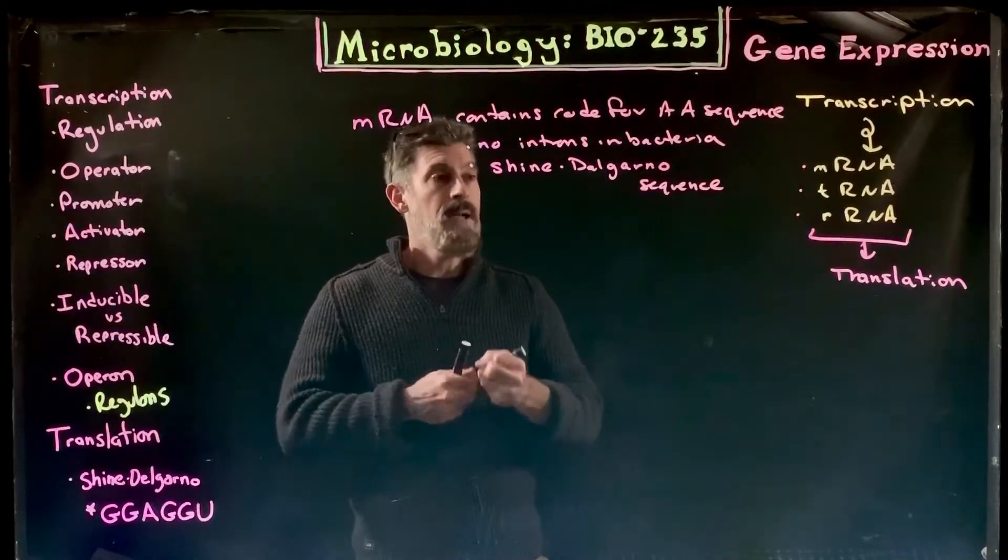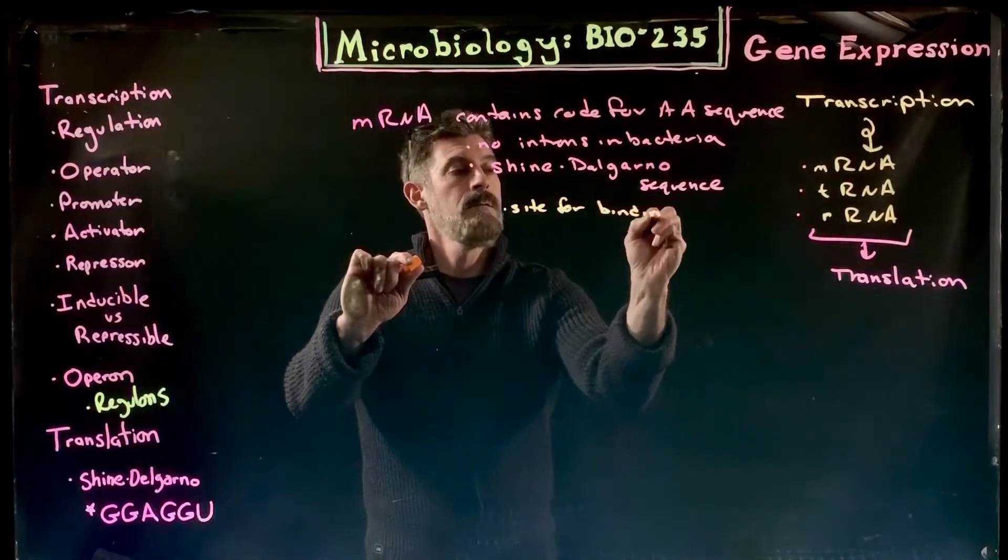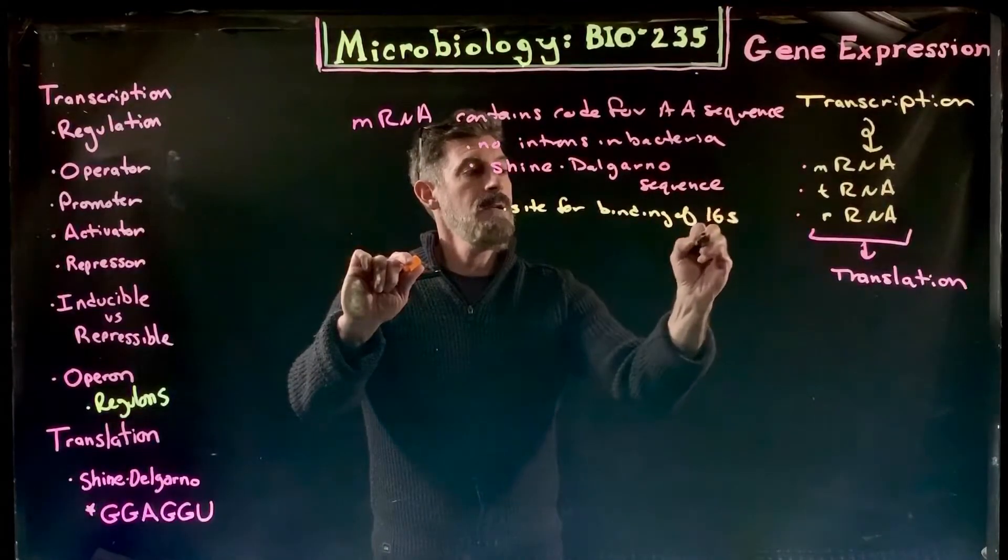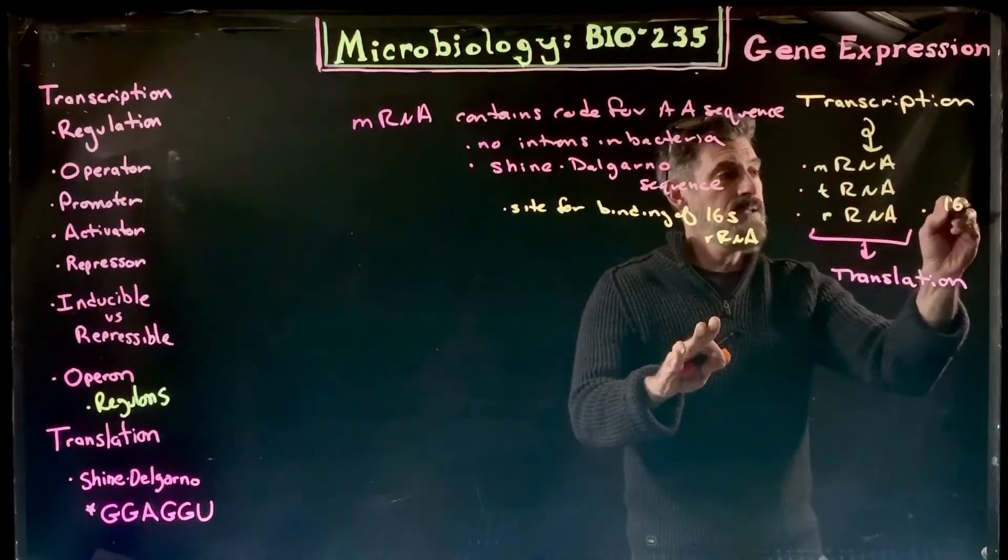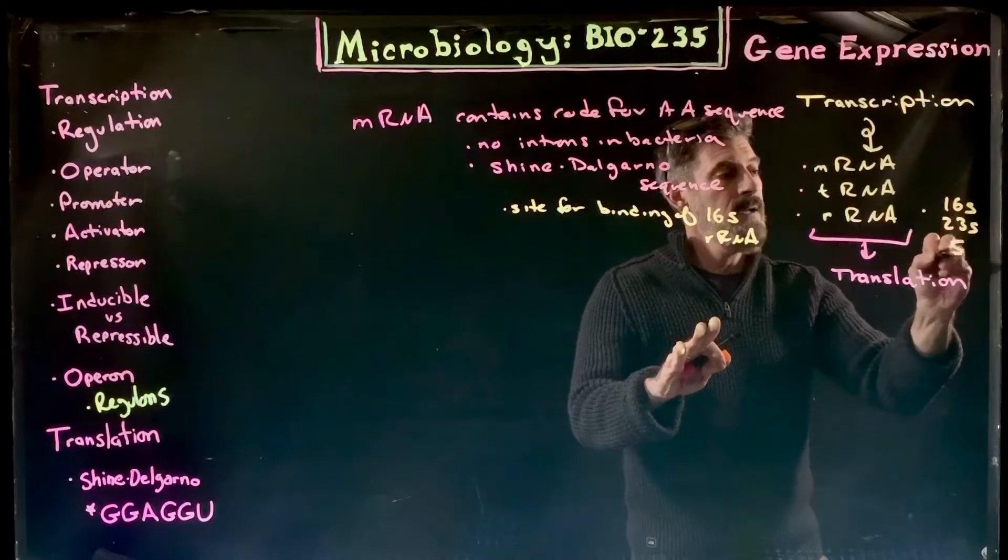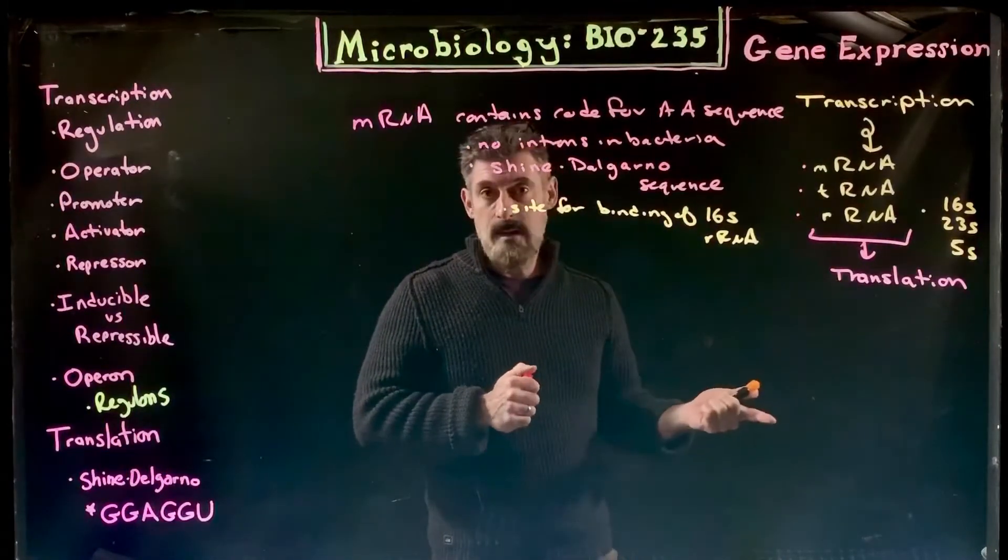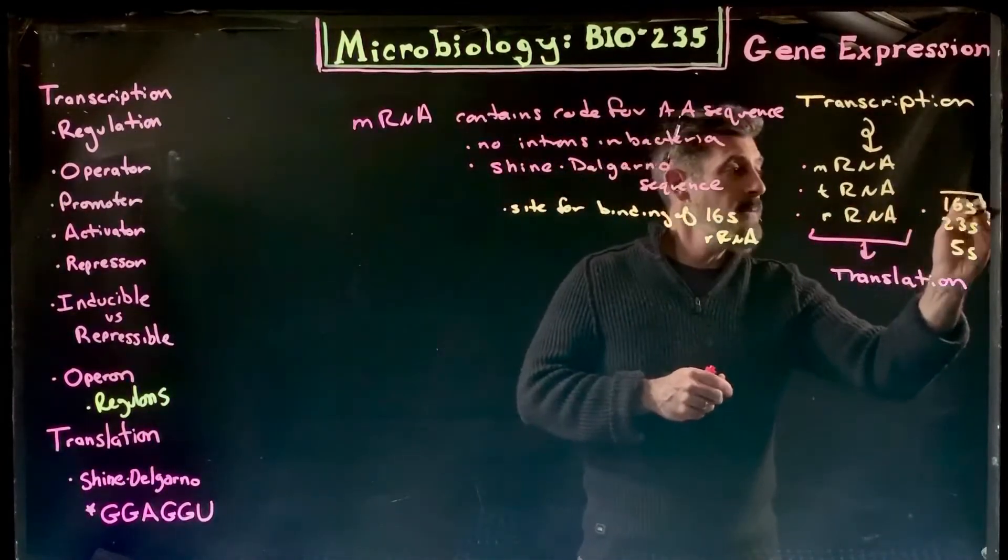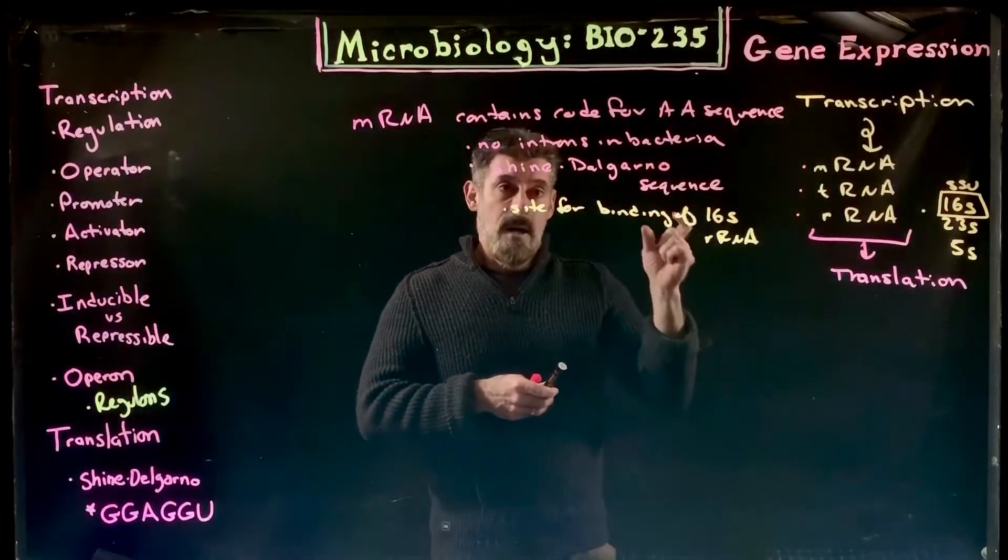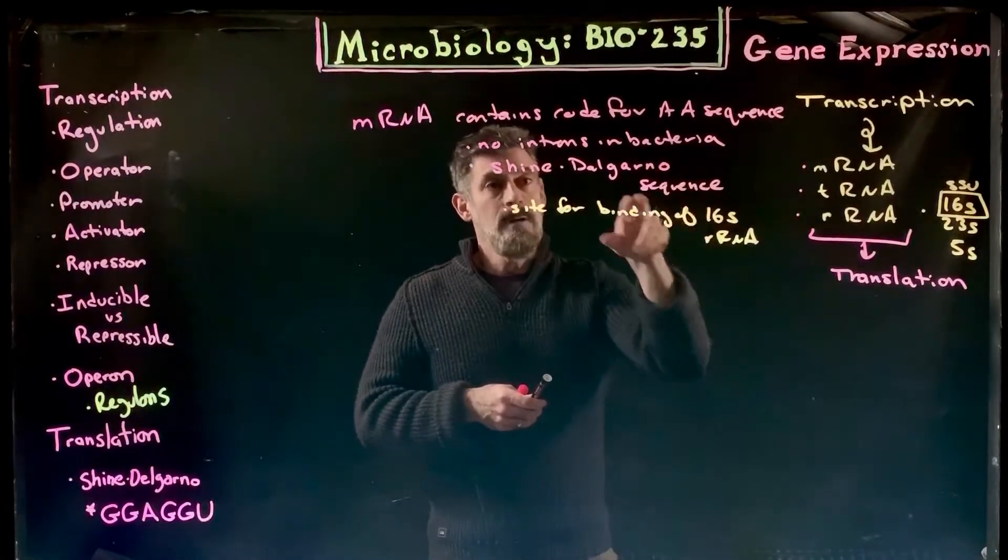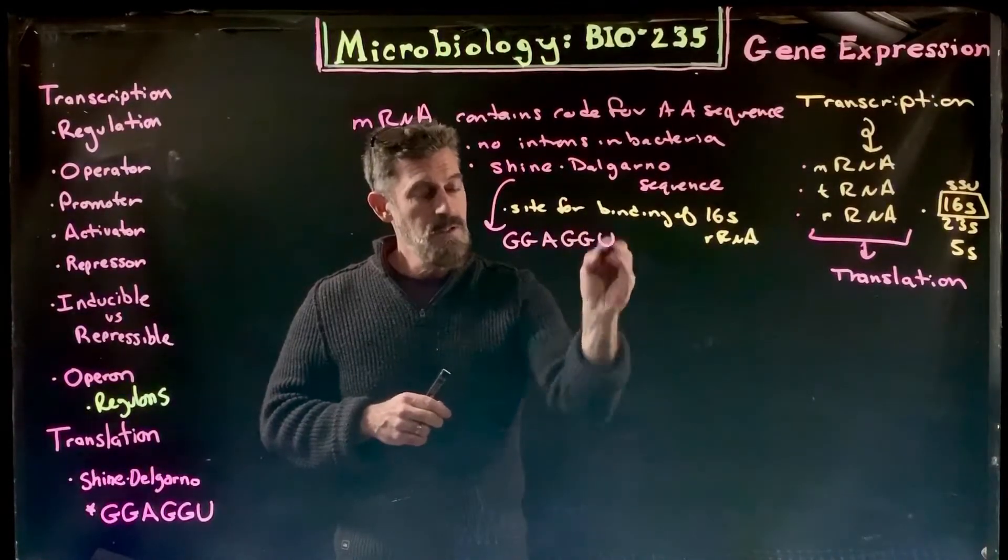This Shine-Delgarno sequence takes the place of the 5' cap. This is going to be the site for binding of the 16S ribosomal RNA. The small subunit is the 16S ribosomal RNA. There is a complementary binding site in 16S ribosomal RNA for the Shine-Delgarno sequence, and the Shine-Delgarno sequence is this G-G-A-G-G-U sequence.